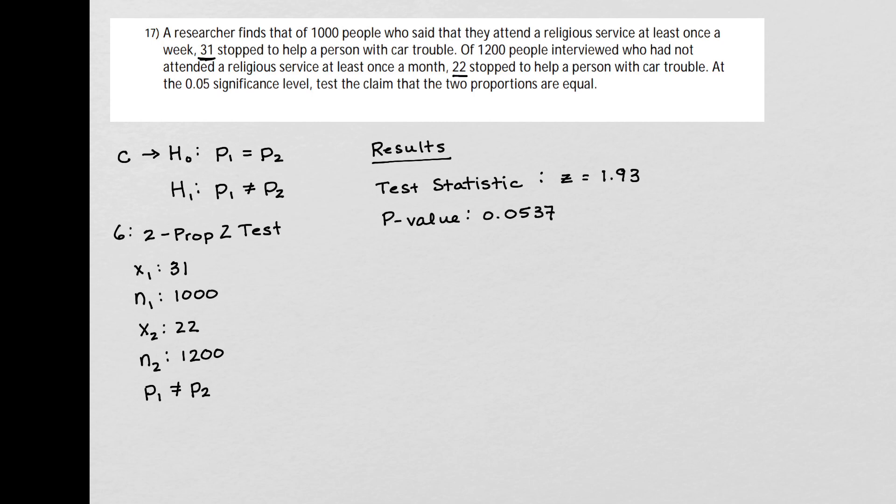Okay, so that's the information from the calculator that I needed. Now I'm going to compare my P-value to the significance level alpha. And in this problem, alpha is equal to 0.05. So since the P-value is larger than alpha, that means that I'm going to fail to reject the null hypothesis.